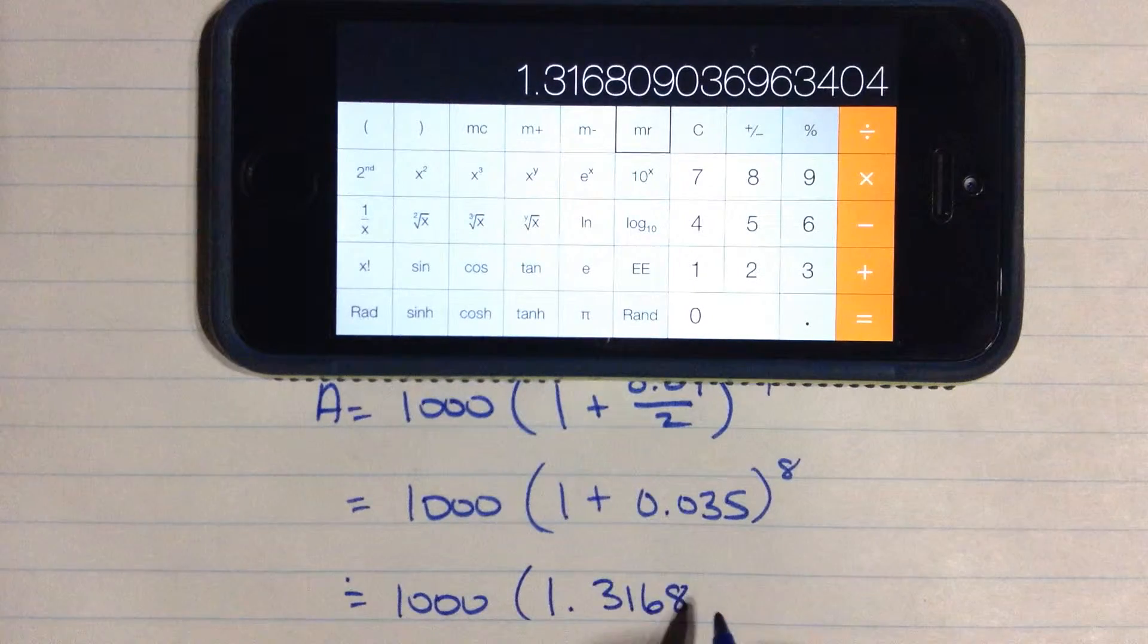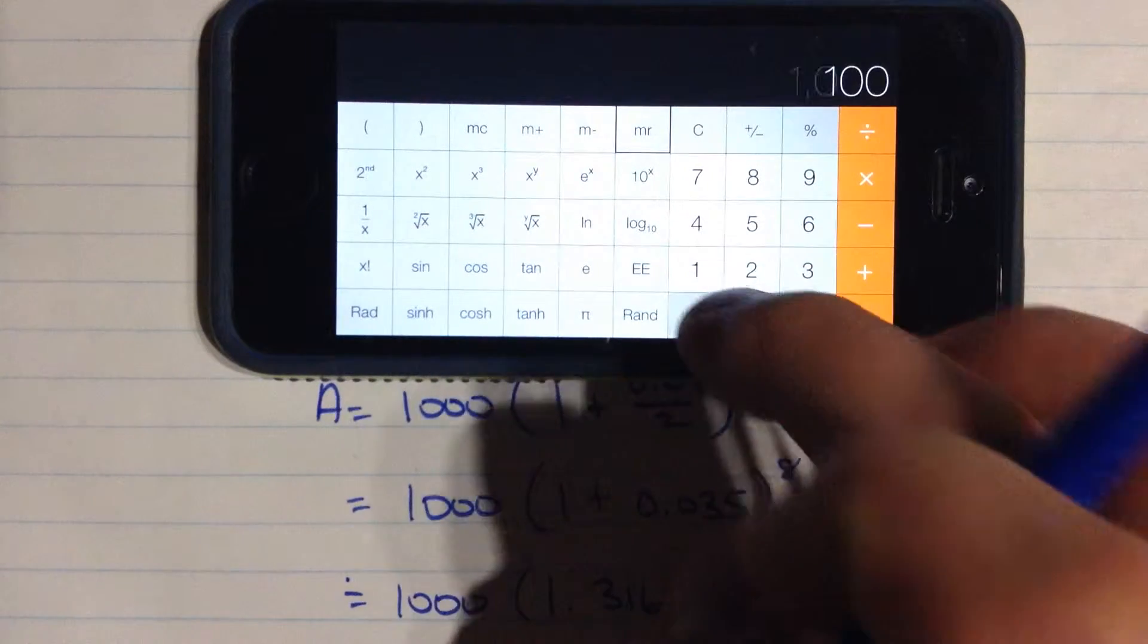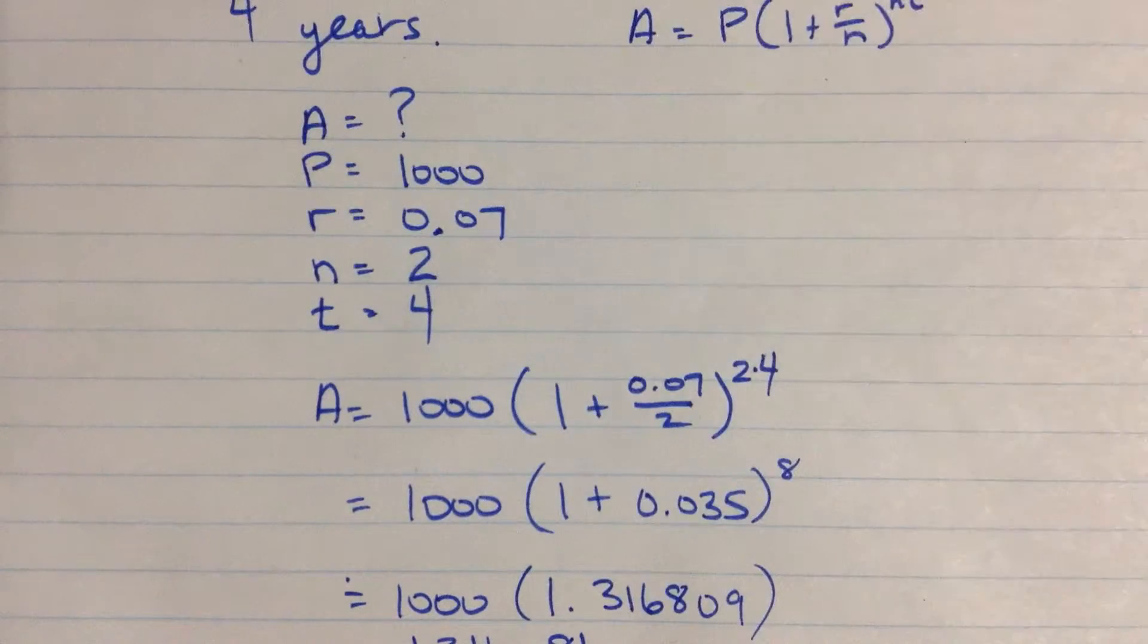It's approximately, let's do a couple more decimal places. And so to finish that off then, I'm going to finish that multiplication, multiply it by 1,000, and I get $1,316.81.